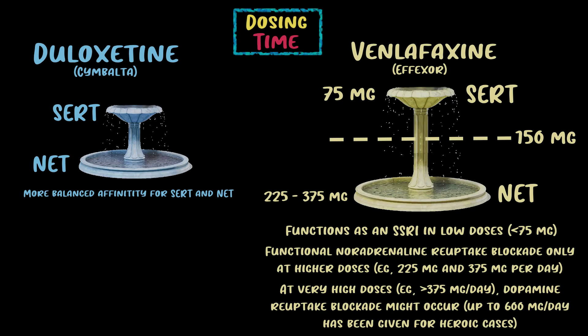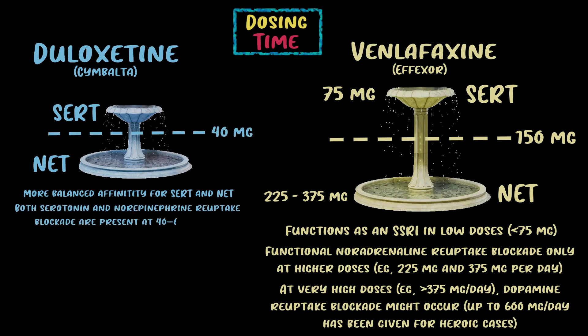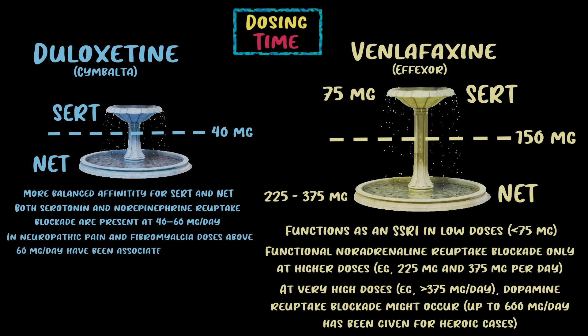Moving on to Cymbalta (duloxetine), which has a more balanced affinity for both receptors. Stahl tells us that some studies suggest serotonin and norepinephrine reuptake blockade are both present at 40 to 60 milligrams — so with Cymbalta you expect more spillover at lower doses than you would with Effexor. Surprisingly, in neuropathic pain and fibromyalgia, doses above 60 milligrams per day have not been associated with an increase in efficacy.